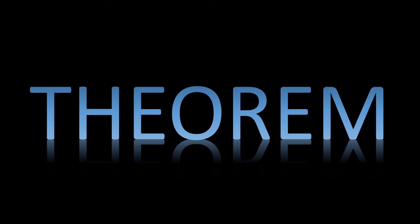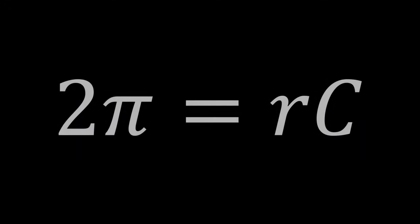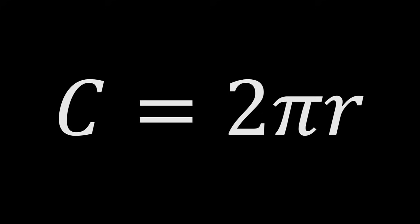Okay, but this channel is called Rise to the Equation, not Rise to the Word. So we're going to play the exact same game, only using math formulas of course. Let's do an example. You're given 2 times pi equals R times C. Can you rearrange the math symbols to create an actual formula? Of course — C equals 2 pi R, the formula for the circumference of a circle.